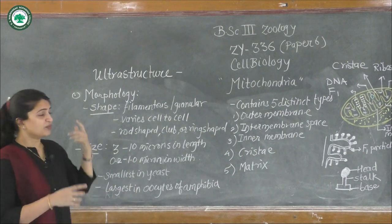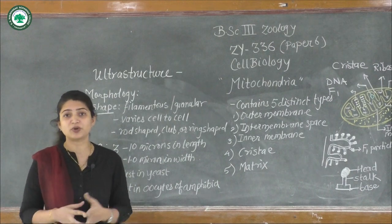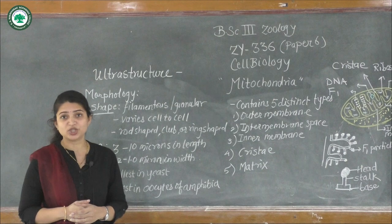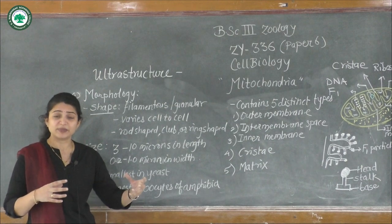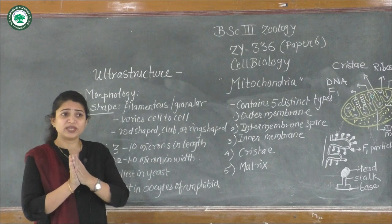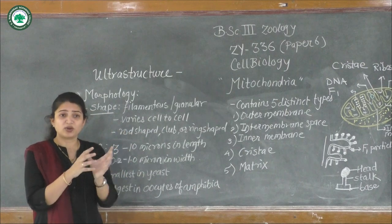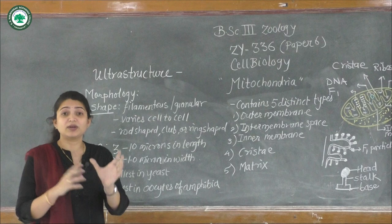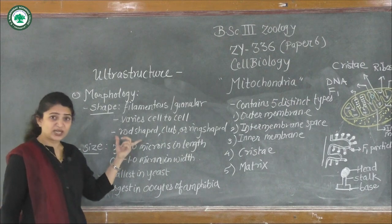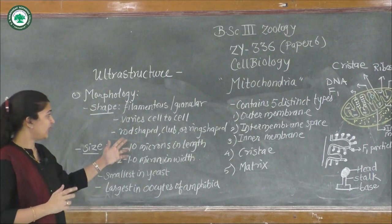Now let's look at the morphology of mitochondria. When seen under the electron microscope, this organelle appears in filamentous, granular, or ribbon shapes. The shape varies from cell to cell according to cell function and type. It may be rod-shaped, club-shaped, ring-shaped, or filamentous — the shape varies.